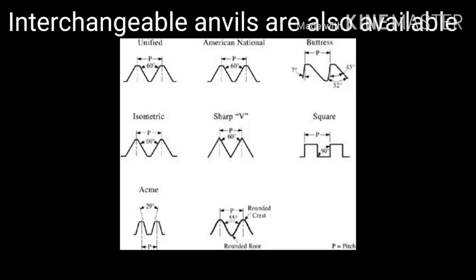The screw thread micrometer has different ranges for different diameters. Different ranges also mean different profiles of thread. For example, there is a V thread, Acme thread, and Worm thread — different thread types. We use different sets of anvils and interchange them to measure different diameters and thread profiles.